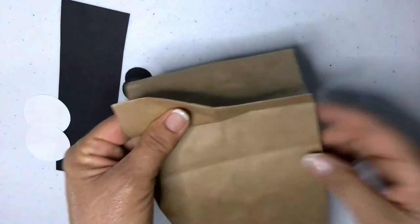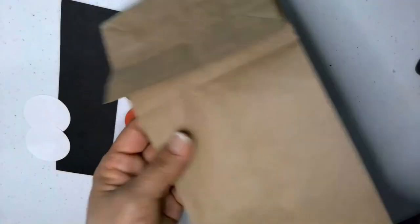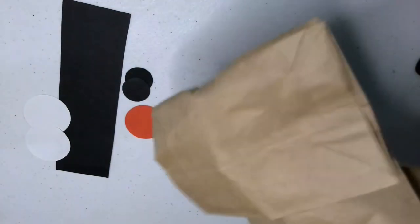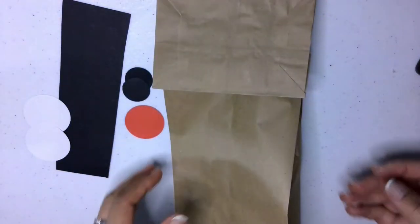But if you staple right under it, just on the very edge, if you staple it, it will make the puppet a lot easier for them to use. Of course, their hand fits much easier. It's a lot smaller than mine.